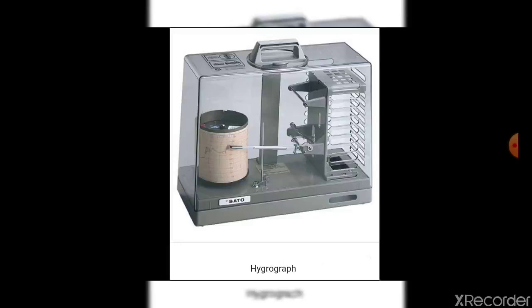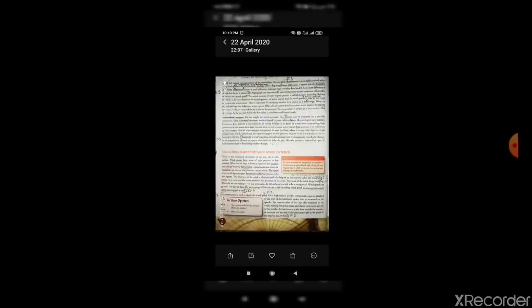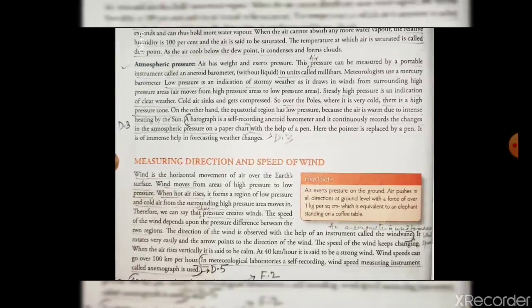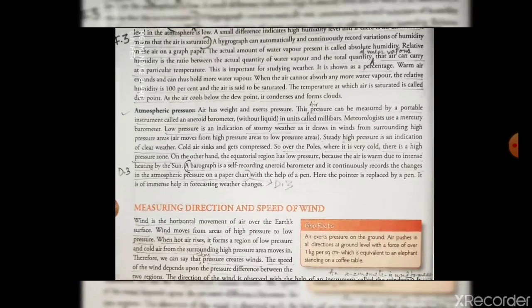When the air can't absorb any more water vapor, the relative humidity is 100% and the air is said to be saturated. The temperature at which the air gets saturated is called the dew point, and when the air cools below the dew point, it condenses and then forms clouds. Now let us learn air pressure.